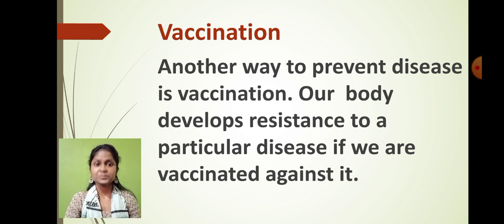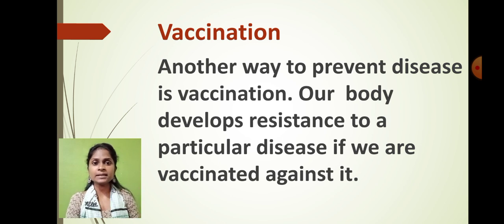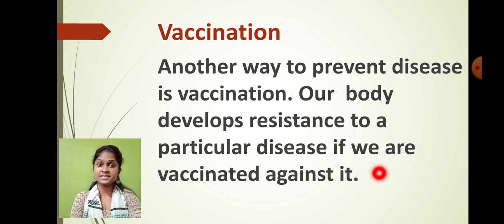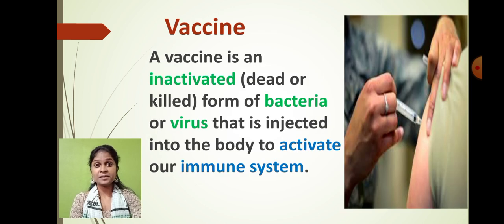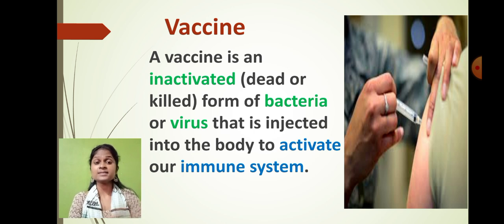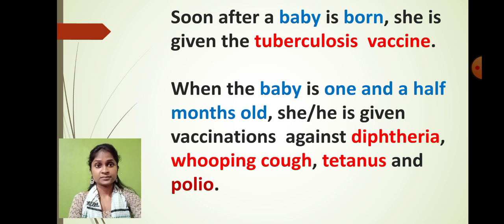Scientists are searching for a vaccine for COVID-19. Vaccination is a way to prevent disease — our body develops resistance to a particular disease if we are vaccinated against the disease-causing germ. A vaccine is the inactivated form of a bacterium or virus that is injected into the person's body so that the immune system is activated against that pathogen. In future, if the live germ enters the body, the immune system will kill it immediately without developing any symptoms.